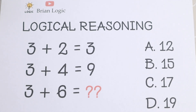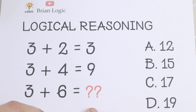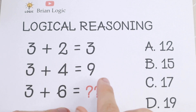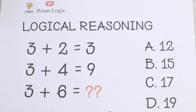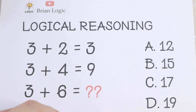Hello everyone! In this video we are going to solve this interesting brain test, logical reasoning problem. We have three rows: 3 plus 2 equal to 3, 3 plus 4 equal to 9, and we need to find what 3 plus 6 will be equal to.